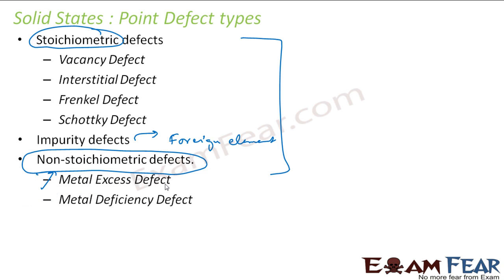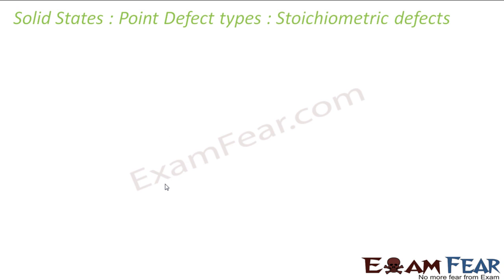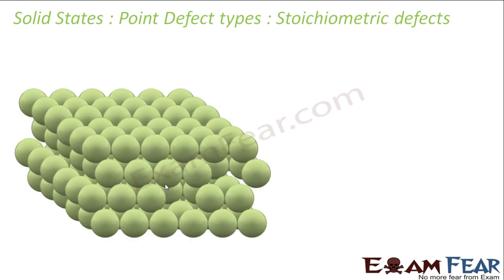In non-stoichiometric defects we have metal excess defect and metal deficient defect. So we'll start with stoichiometric defects. It's a point defect type. This defect does not disturb the stoichiometry of the solid. This defect does not impact